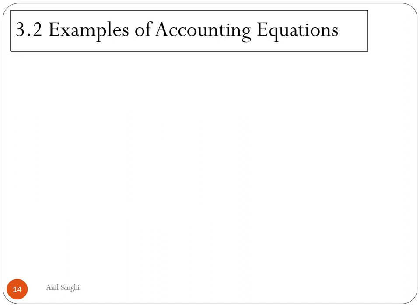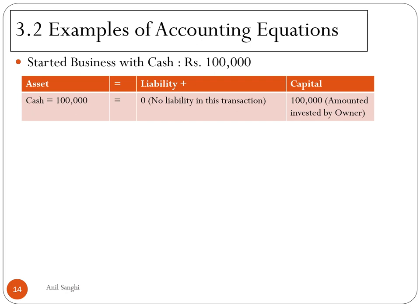Let us look at some examples of the accounting equation. A businessman starts a business with cash of Rs. 1,00,000. The business gets cash — cash is an asset of Rs. 1,00,000. There are no liabilities right now, but there is capital of Rs. 1,00,000 invested by the proprietor. So asset equals capital plus liability: Rs. 1,00,000 = Rs. 1,00,000 + zero. The equation balances.